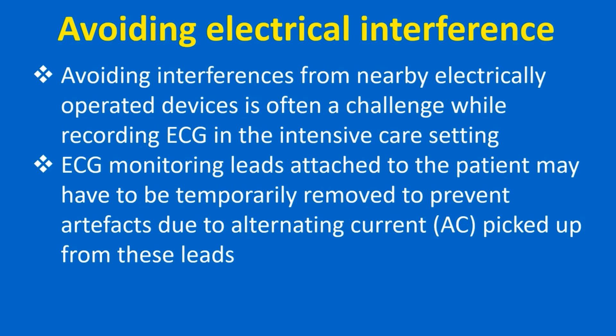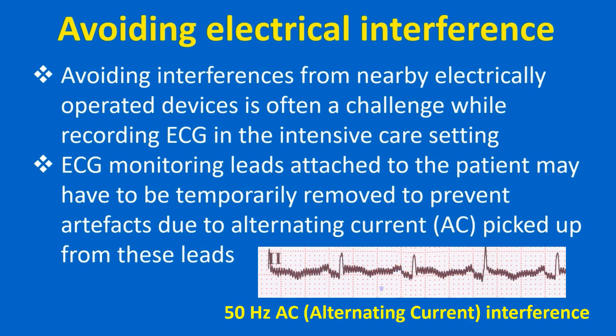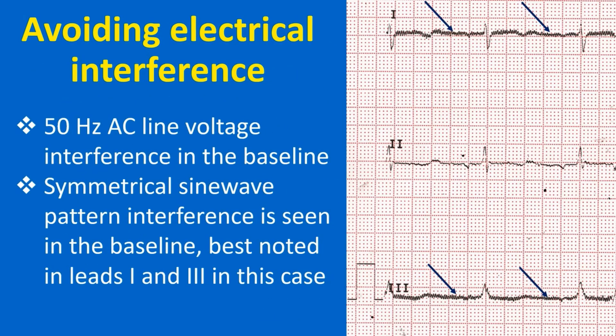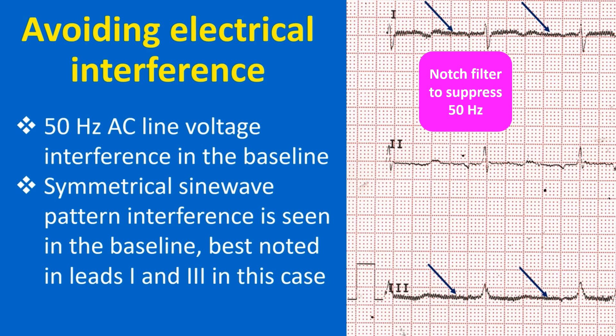Avoiding interference from nearby electrically operated devices is often a challenge while recording ECG in the intensive care setting. ECG monitoring leads may have to be temporarily removed to prevent artifacts due to alternating current picked up from these leads. Power cords of electrically operated beds, pneumatic compression devices, infusion pumps, and other devices in close vicinity may also have to be removed from power sockets to reduce electromagnetic interference from the AC line. AC interference is seen as a symmetrical sine wave pattern in the baseline at the frequency of the line voltage — either 50 Hz or 60 Hz. In most modern ECG machines, notch filters are used to suppress AC interference, though it may still appear if the interference is strong.